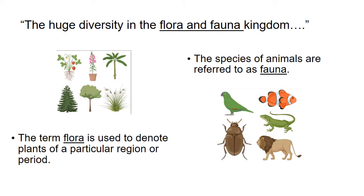There are two major words associated with natural vegetation: flora and fauna. The term flora is used to denote plants of a particular region or period. The species of animals are referred to as fauna.